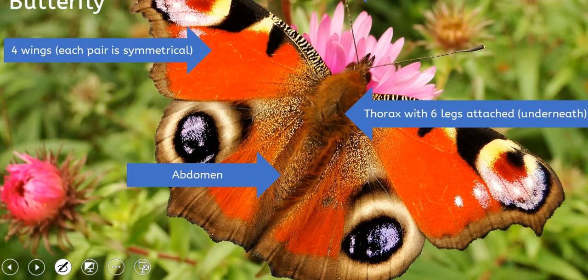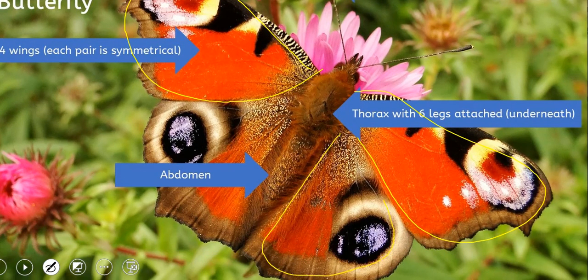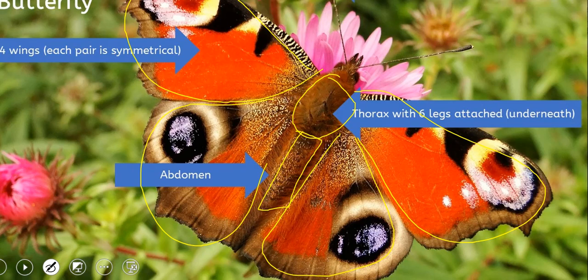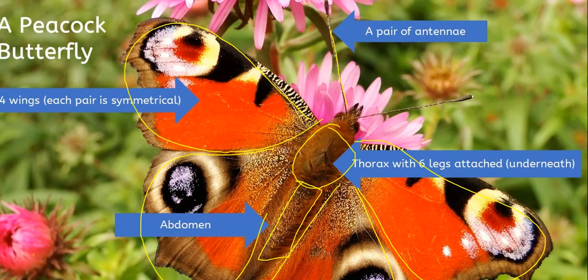Here's a close-up look at a peacock butterfly. You can see that they have four wings — the two at the front and then the two at the back. They are symmetrical, which means that they are the same, so if you folded them over they would be equal. Here we have the abdomen at the back and the thorax, and remember the thorax has the legs attached as well as the wings. We also have the antennae at the head.